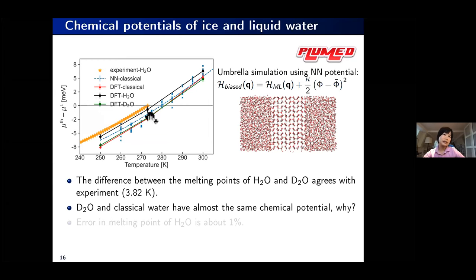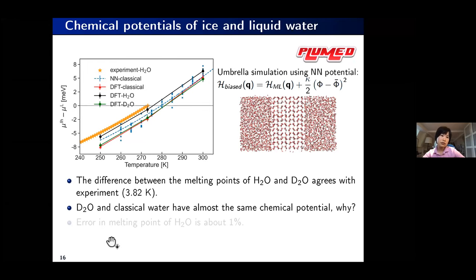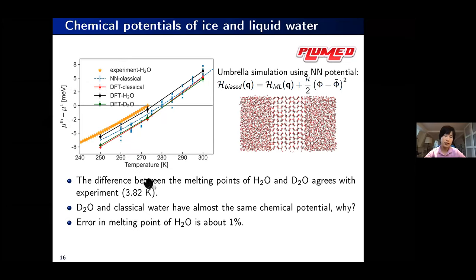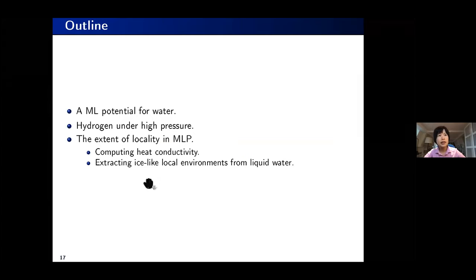We also computed the chemical potential difference between ice and liquid water using umbrella sampling on coexistence systems, corrected to the DFT level with nuclear quantum effects, considering both H₂O and D₂O heavy water. Comparing with experiments, we are really within a hair of experimental results. Even the difference between the melting point of D₂O and H₂O is predicted very accurately. Notably, classical water and D₂O almost overlap because there is a reversal in the thermodynamic integration integrand — a cancellation of nuclear quantum effects.